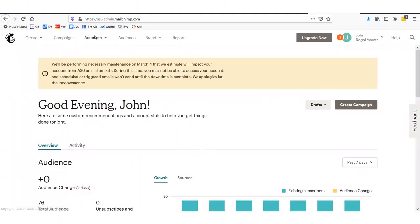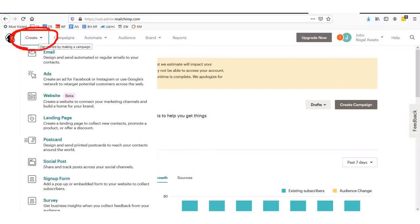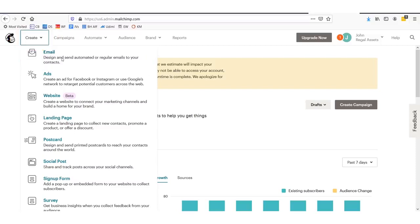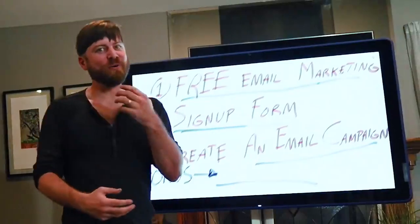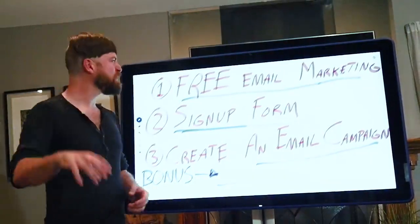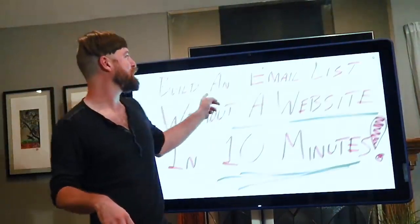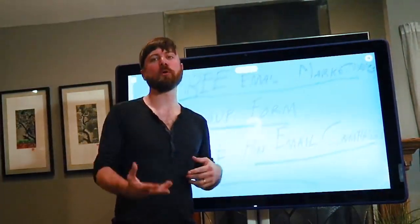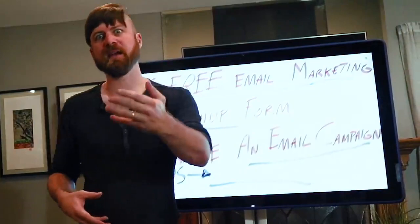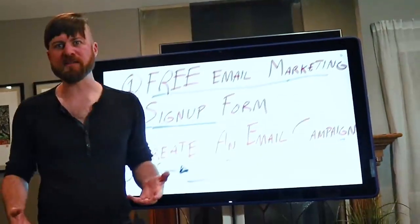How do you actually start marketing to people? The last step is to go under create, then design and send regular or automated emails to your subscribers. From there you go through the step-by-step process to create that. That should have been under 10 minutes — maybe even under 5. You just learned how to build an email list, set it up without a website in under 10 minutes. It's for marketing, meaning the people are opting in, so it's going to be GDPR compliant and you can market to these people.